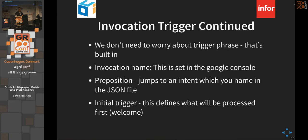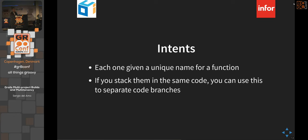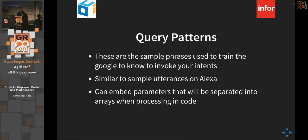The invocation name is set in the console and must be unique — if someone else has picked it, it won't work. Each intent has a unique name for the function it calls; you can stack them with a switch statement or use separate controller endpoints. Query patterns are the sample phrases — similar to utterances in Alexa — and you embed parameters in them, like 'find a brighter color for blue,' where 'blue' is the parameter.